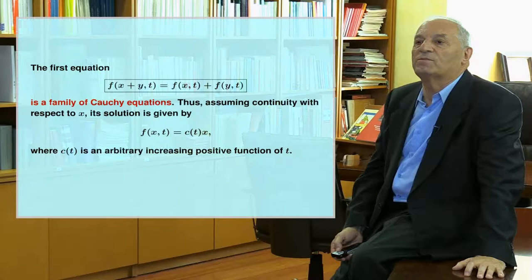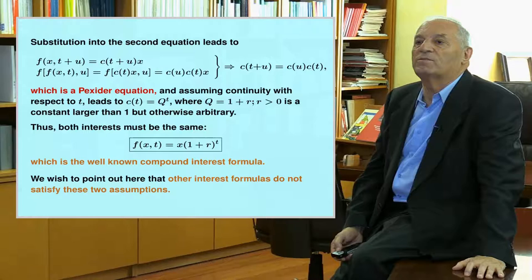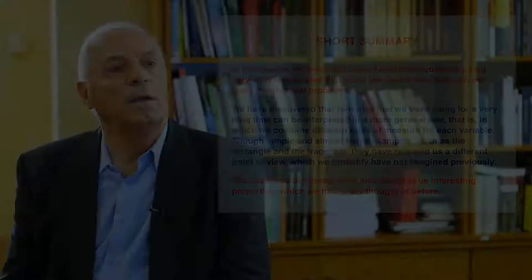The first equation is a family of Cauchy equations. Assuming continuity with respect to x, its solution is given by the formula below, where c is an arbitrary increasing positive function of t. Substitution into the second equation leads to a Pexider equation, and assuming continuity with respect to t leads to c of t equal to q to the power t, where q equals 1 plus r and r greater than 0 is an arbitrary constant. This gives the well-known compound interest formula. Other interest formulas do not satisfy these two assumptions.